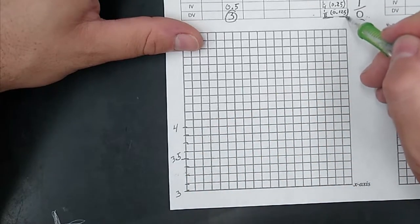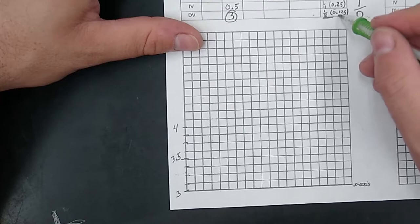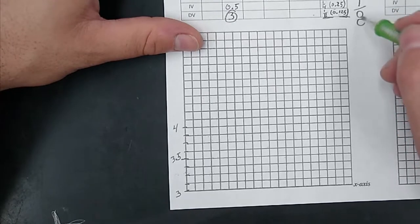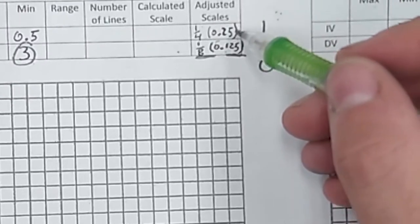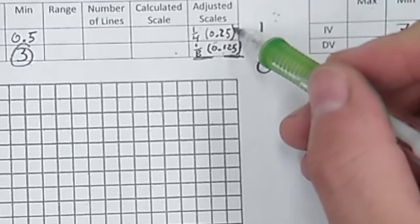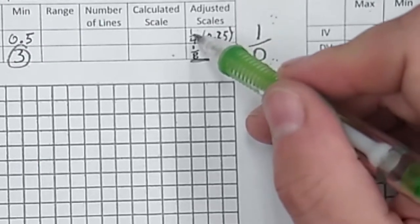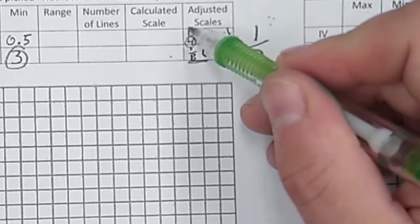So rather than getting out a calculator and doing 0.125, you should know that that is just 1 eighth. Same thing when you do your IV, you're going by quarters, so every other line would be half or every 4 lines would be going up by 1.